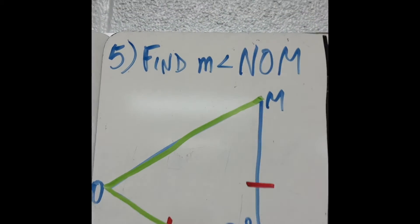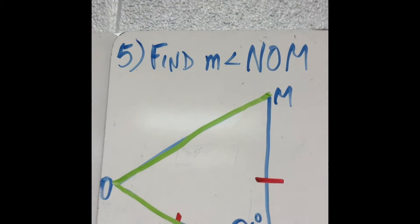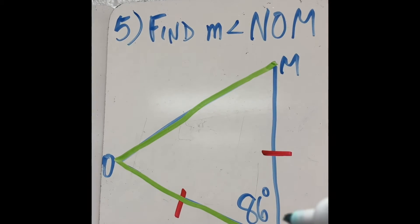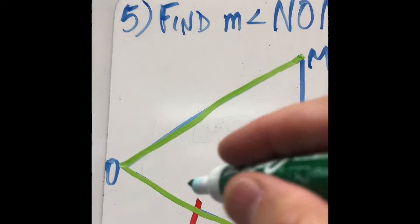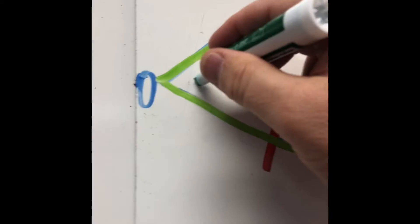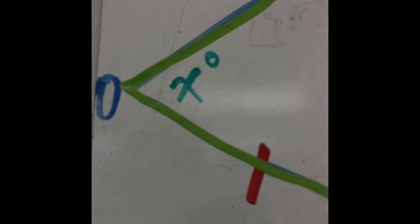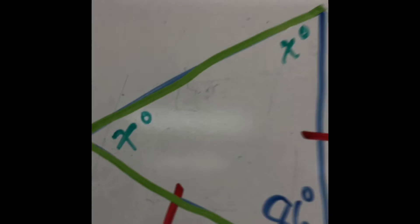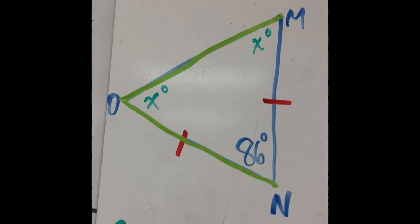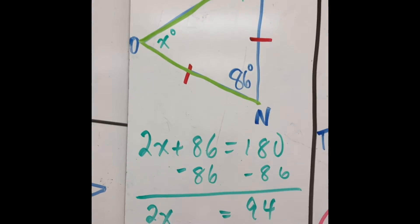Here it says find angle NOM. NOM is the same as angle O, right? Well, if this is 86, okay? Now, first of all, if these two sides are equal, then this is x and this is x. Okay? So x plus x plus 86 equals 180. Solve for x. x equals 47.